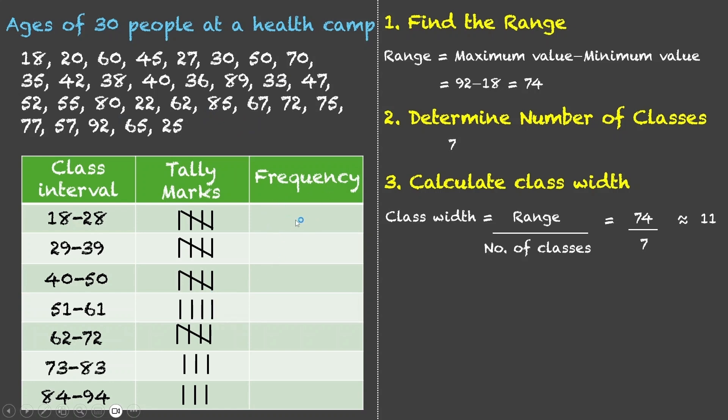Now, comes the frequency. So, for the first class interval, we have 1, 2, 3, 4 and 5. Frequency is 5. This is also 5, 5, 4, 5, 3 and 3.